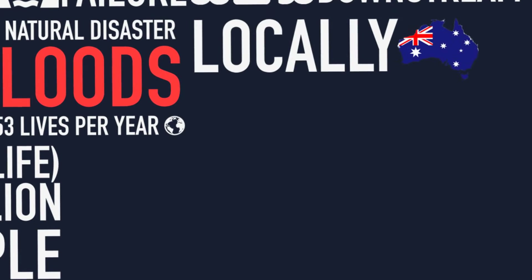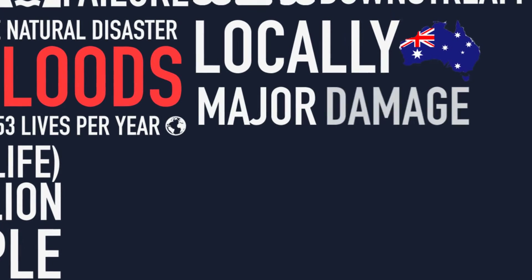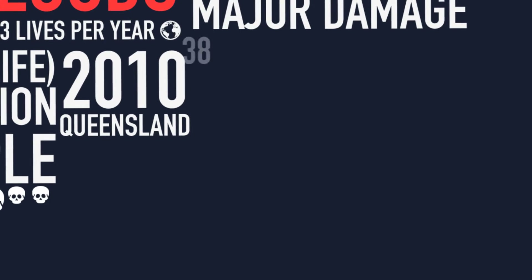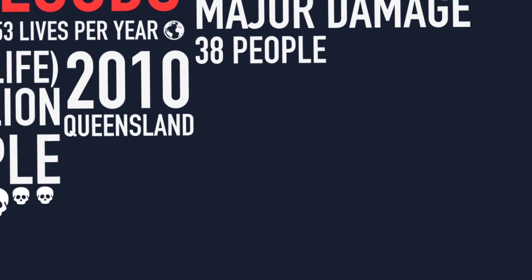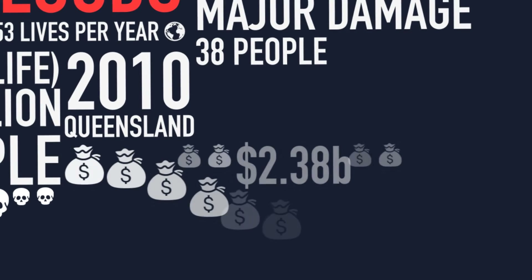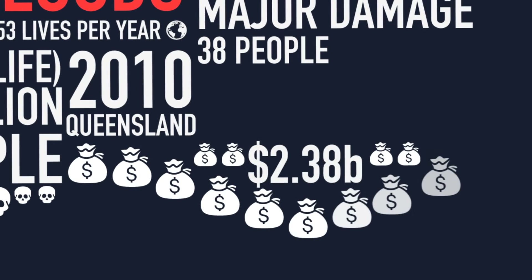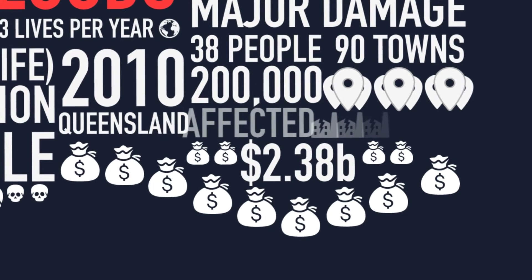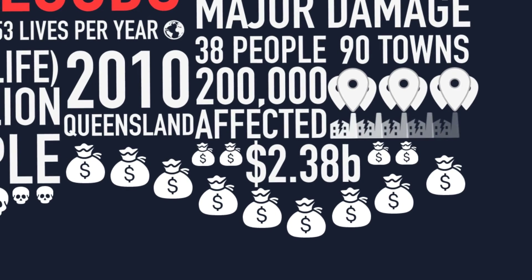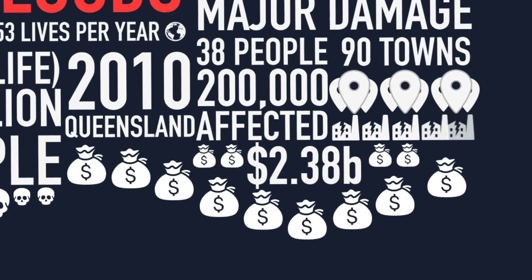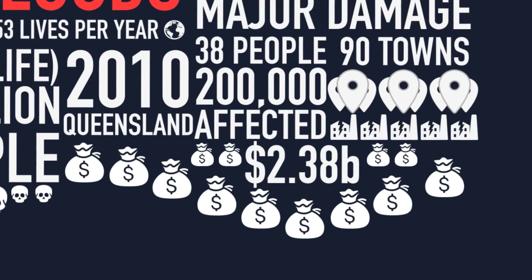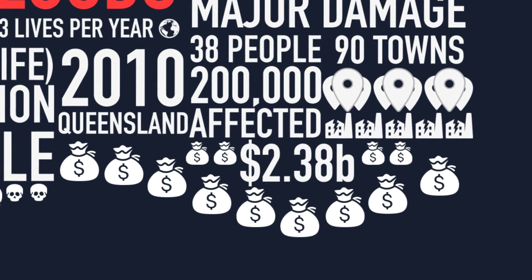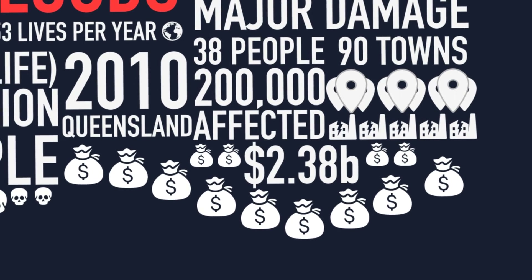Locally, floods have caused major damage. In 2010, the Queensland floods claimed the lives of 38 people and caused $2.38 billion worth of damage. 90 towns and 200,000 people were affected. The hardest hit areas included Brisbane, Rockhampton, Emerald, Bundaberg, Dalby, Toowoomba, Roma and Ipswich.